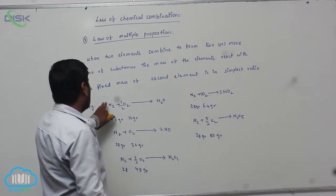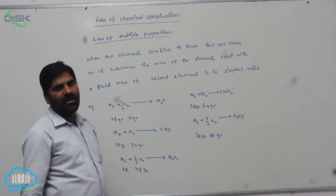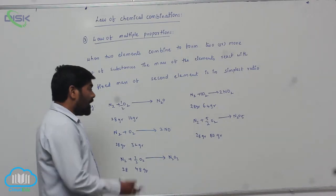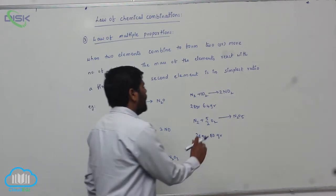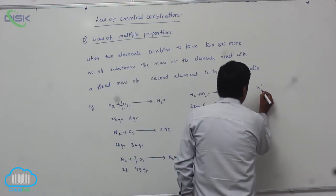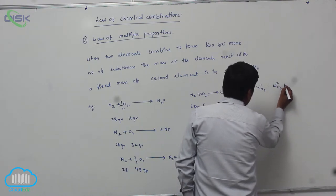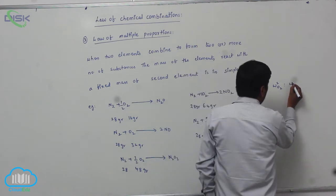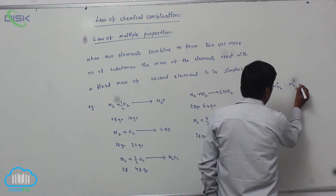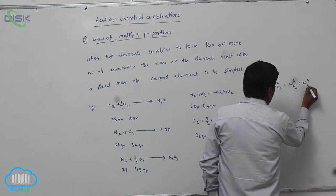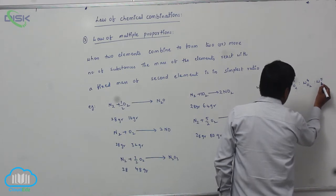In all these compounds formed from these reactants, the nitrogen mass is always fixed at 28 grams. But the ratio of oxygen weight varies: W₁O₂, W₂O₂, W₃O₂, W₄O₂, and W₅O₂ across the different compounds.